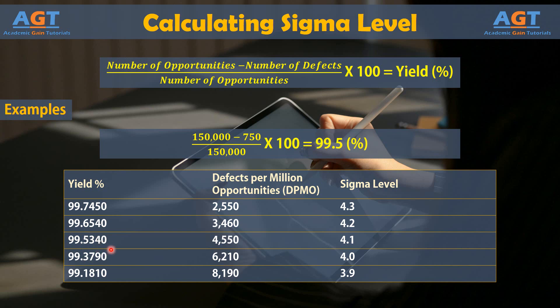So, the process described in our example is currently between 4 and 4.1 sigma. This is how we can calculate the sigma level of any given process.